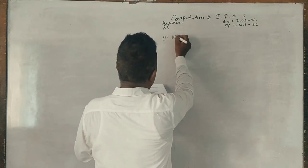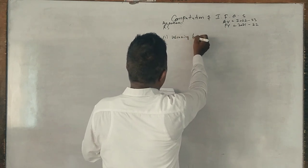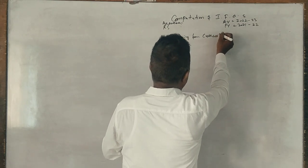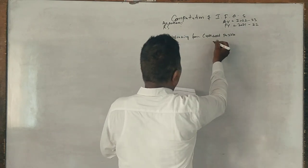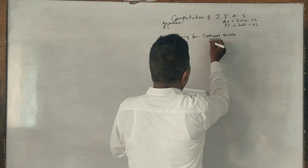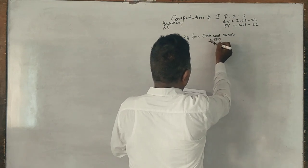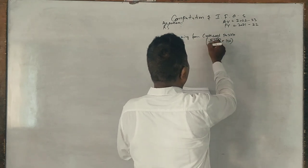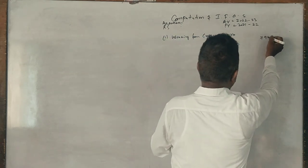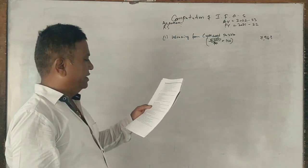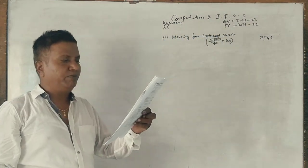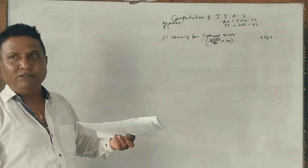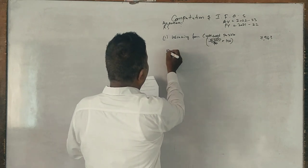Winning from crossword puzzle: 5,500 divided by 70 into 100 equals 7,943. Next, royalty from textbook return 48,000, admissible expenses is 12,500. Party told see, royalty received is 48,000 and expenses admissible minus 35,500.